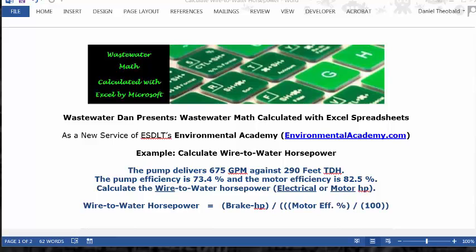Today's solution calculates wire-to-water horsepower with the formula: wire-to-water horsepower equals brake horsepower divided by motor efficiency percentage divided by 100. Motor efficiency percentage divided by 100 can also be described as the decimal equivalent of the motor efficiency percentage.